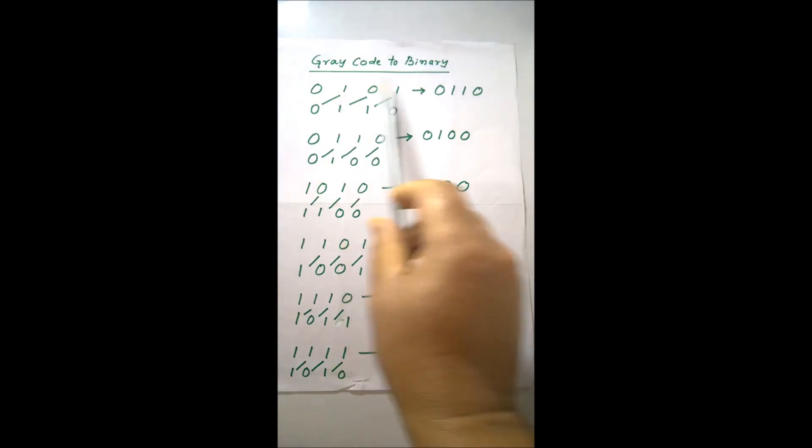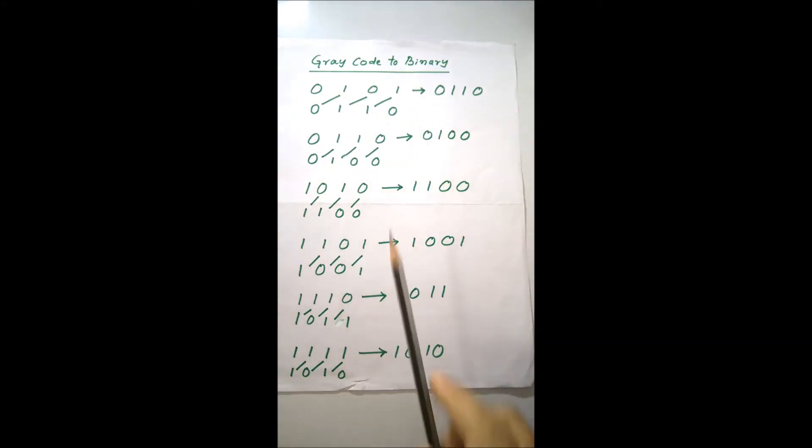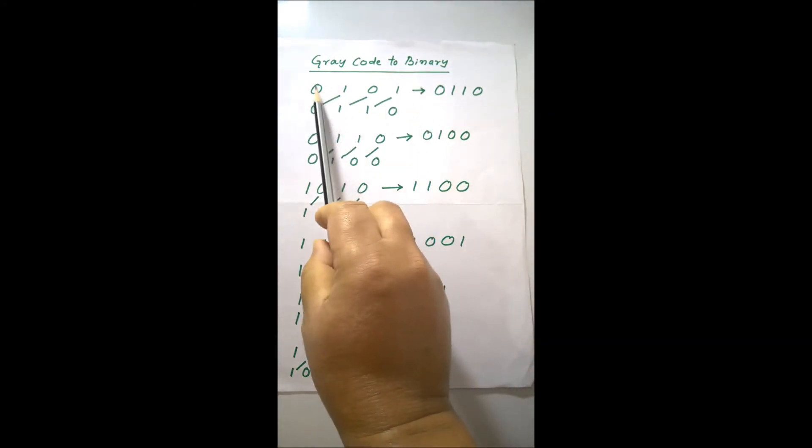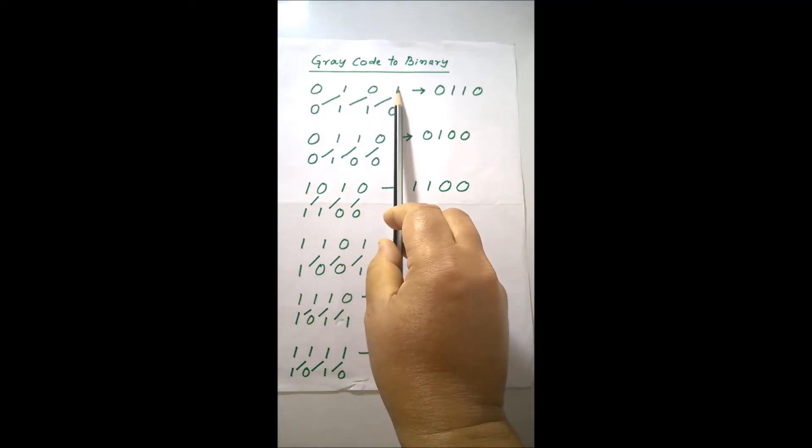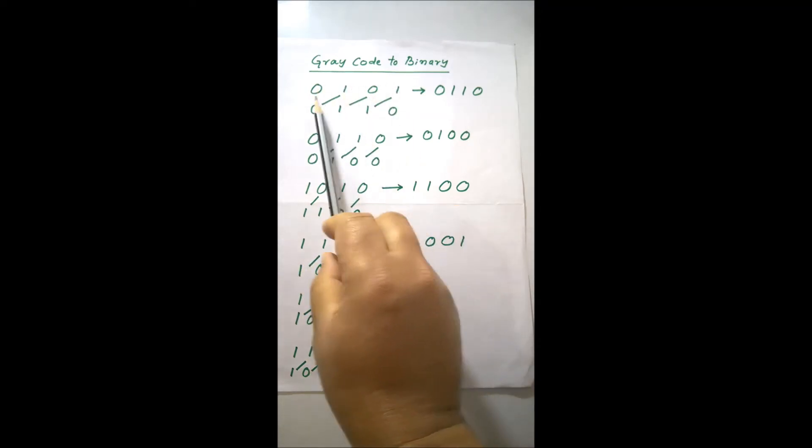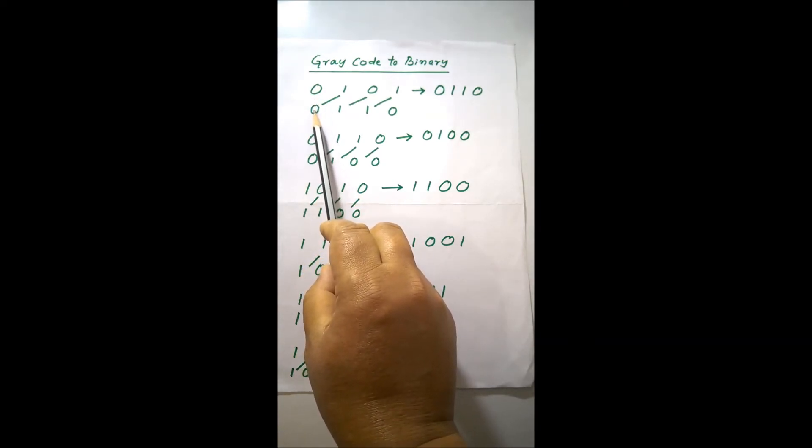I am showing you grey code to binary. Here you take the number, suppose 0101. Below you write exactly the first number, most significant bit you write exactly as it is.